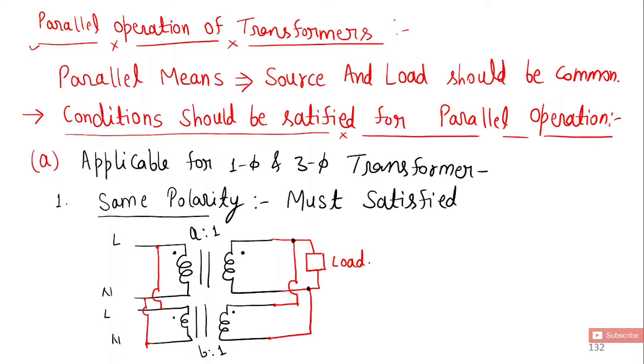Actually when the power requirement is more and you have a less rating transformer, you need to do the parallel operation of transformers. For example, if generation is in megawatt but you have transformers of less kV rating, you need to connect them in parallel to transmit this much amount of power.